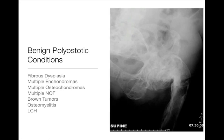Non-ossifying fibromas: a single one is pretty common, but it's rare to have multiple. There are conditions where you do develop those. Brown tumors associated with hyperparathyroidism — that's probably not so uncommon, as hyperparathyroidism is a pretty common condition. Multifocal osteomyelitis — infection can mimic bone tumors and will be on many differential diagnoses; you can certainly have multiple areas of osteomyelitis. And Langerhans cell histiocytosis, or EG, is rare but will also appear as multiple lytic lesions — this is a polyostatic condition.